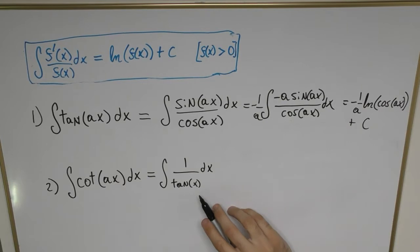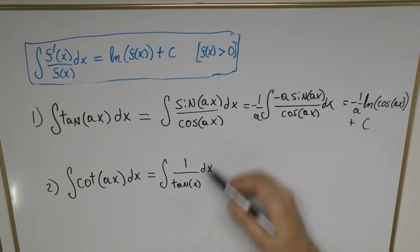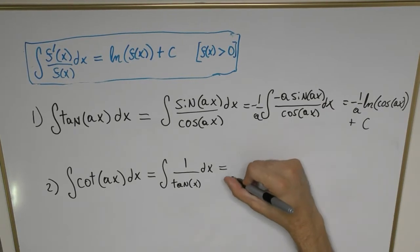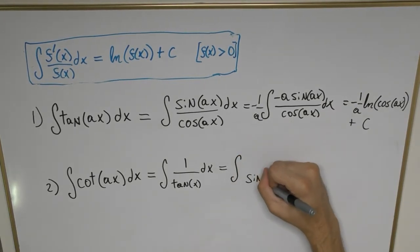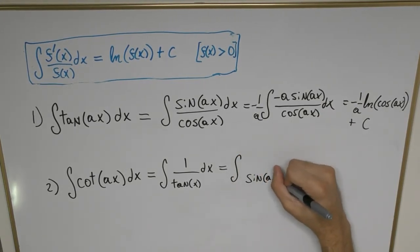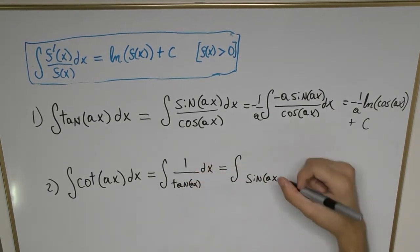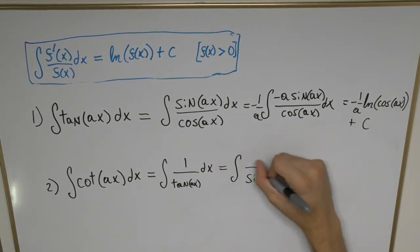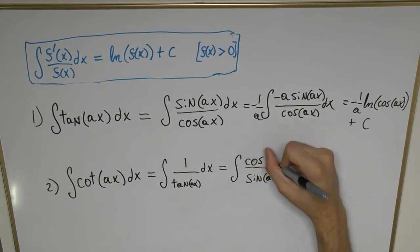Applying the same logic, we replace the cotangent function with a ratio of sine and cosine. Sine is in the denominator, cosine in the numerator, and we include the factor of a.